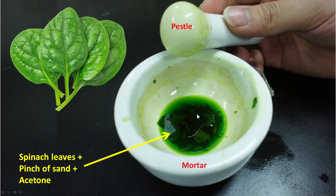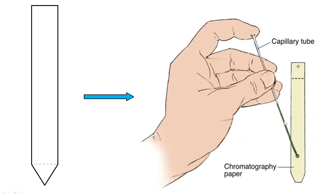You can use a capillary tube to apply the extract onto the paper. This is a Whatman filter paper, also called chromatography paper — it's a special type of paper. You should not write on it with a pen or ink pen; you should mark it with a pencil only.